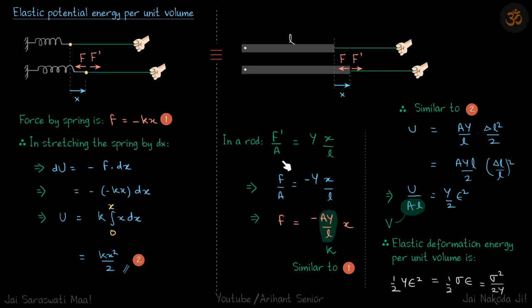If we write it in terms of F, the sign of F dash will be changed, so the same equation we can write as F by A is equal to minus Yx by L. Here F is the internal force. Or you can write F is equal to minus of AY by L into x.